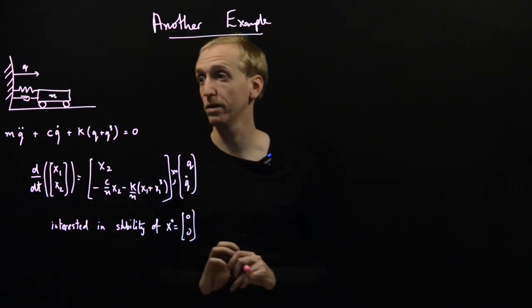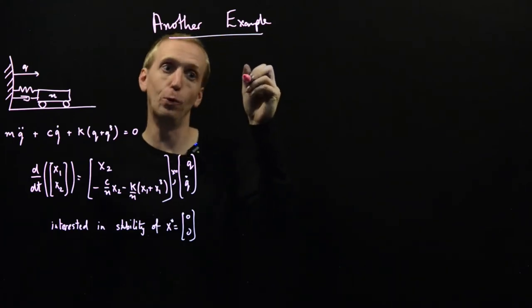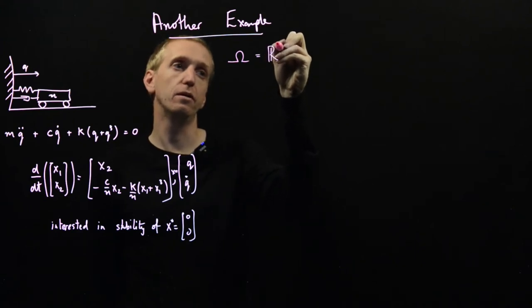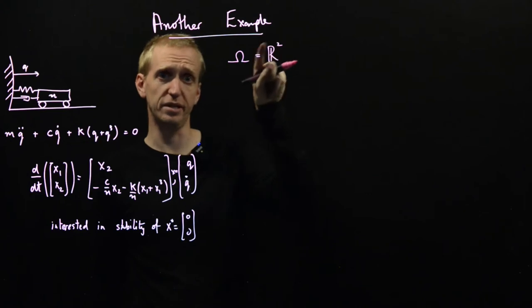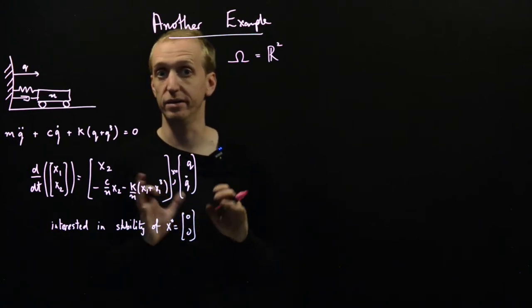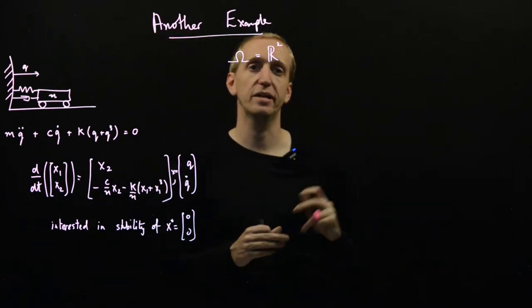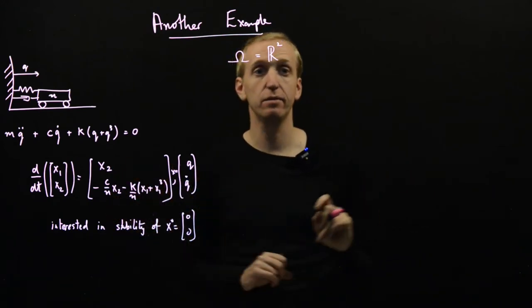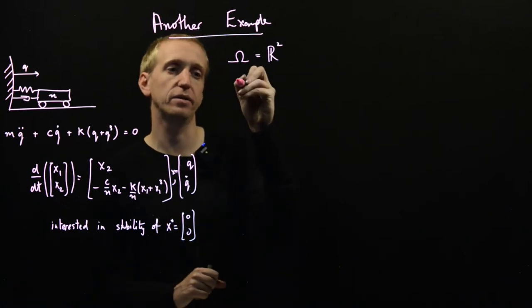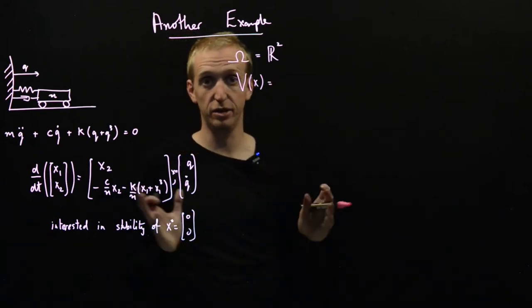So well the first thing we need to do is define a domain and a Lyapunov function and we're going to go for global results this time. So we're just going to say that our domain is equal to R². So this is just saying we're not going to restrict the values that x1 and x2 can take on. We want to prove stability no matter what region of the state space we look at.